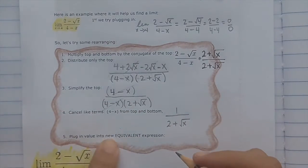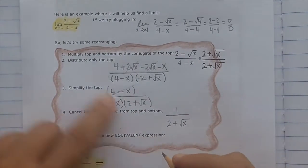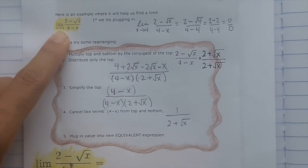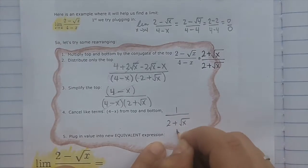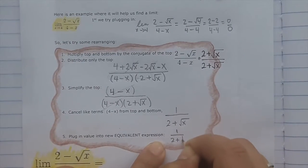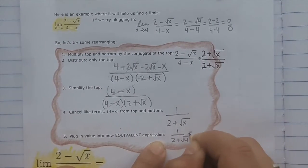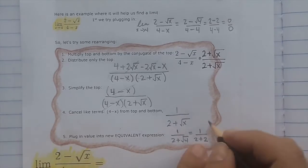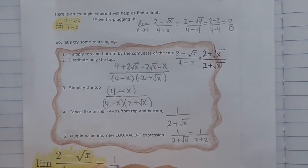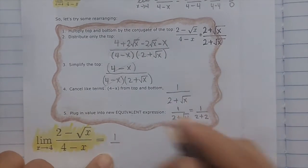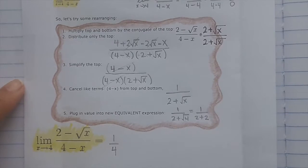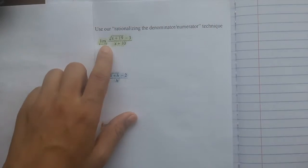Now plug in the value into the new equivalent expression. It's the limit as x approaches 4, so put 4 everywhere you see x. You get 1 over (2 plus radical 4), which is 1 over 4. So the limit as x approaches 4 of that function is 1 over 4.